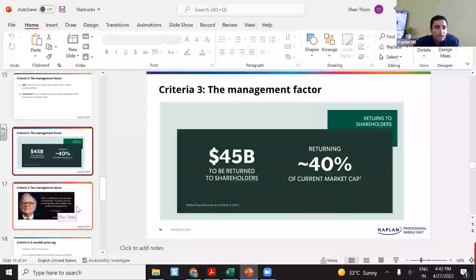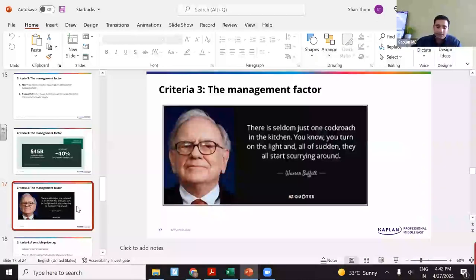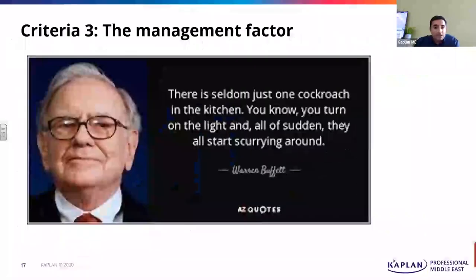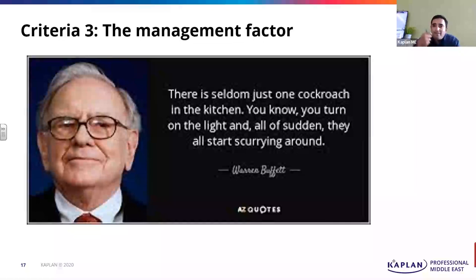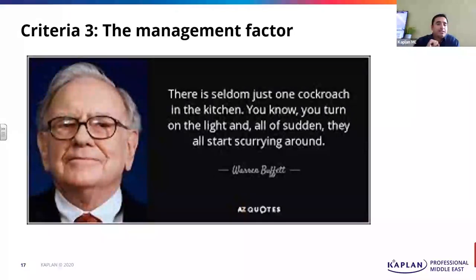Another thing you really need to know while analyzing management — Warren Buffett has said a wonderful thing: there's seldom one cockroach in the kitchen. You turn on the light and all of a sudden they all start scurrying around. This is very, very important when you're analyzing businesses or especially management. As an outsider, we have very, very limited information about the company. So all you are looking for is: do I really see one cockroach? Do I really see some inconsistencies in their numbers?